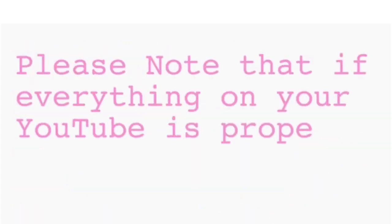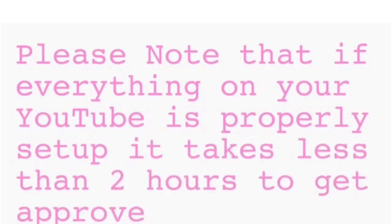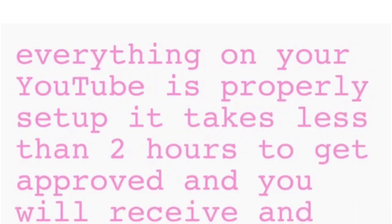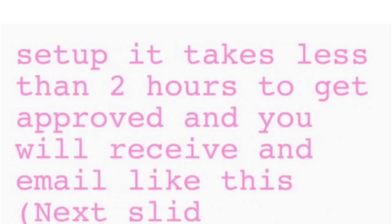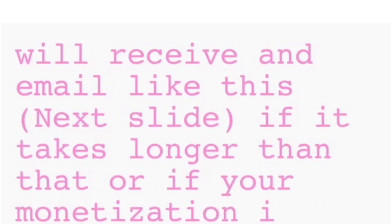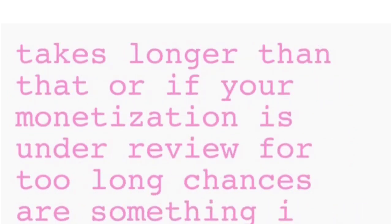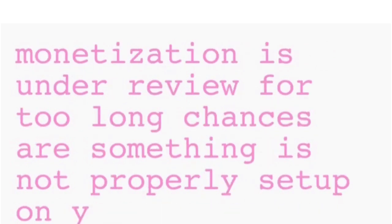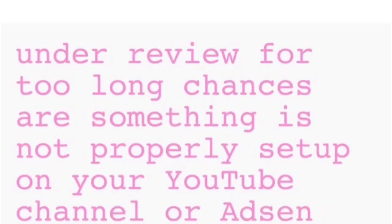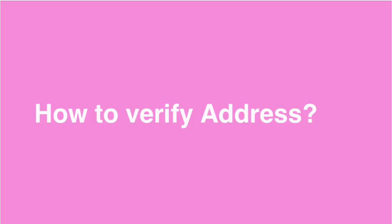Please note that if everything on your YouTube is properly set up, it takes less than two hours to get approved and you'll receive an email — check the next slide. If it takes longer than that, or if your monetization is under review for too long, chances are something is not properly set up on your YouTube channel or AdSense. Here is the email you receive after your AdSense has been approved.